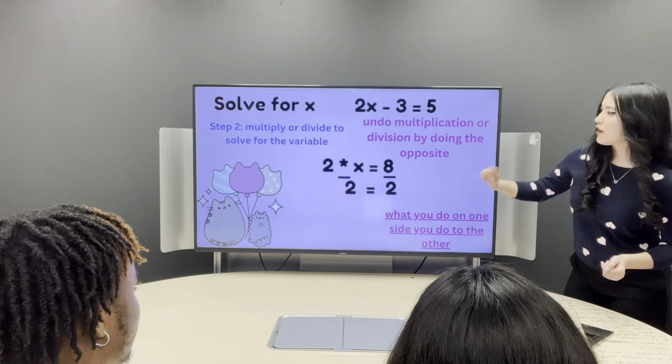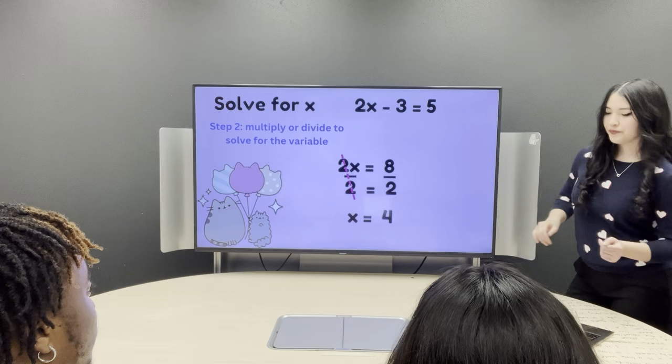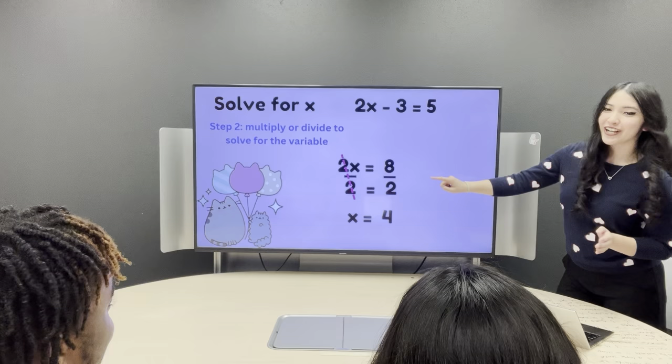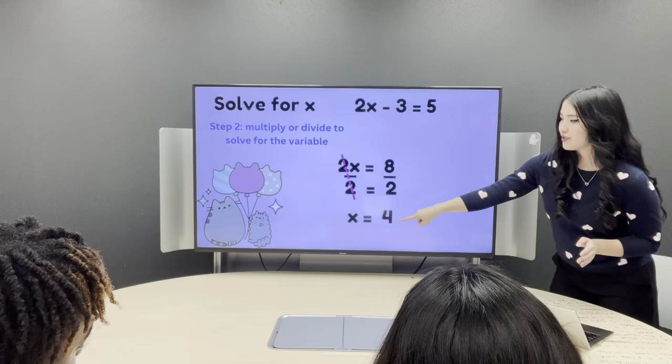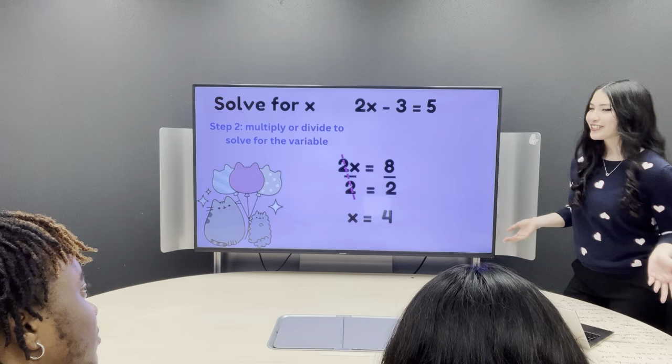And what's 8 divided by 2, Elena? 4. Okay, good. So, you can see on the left side of the equation, it's being cancelled out. Which, whenever you bring the x down, and then this down, it gives you x equals 4. So, we just only did 2 steps, but we just solved this whole entire equation. Yay! Woo!